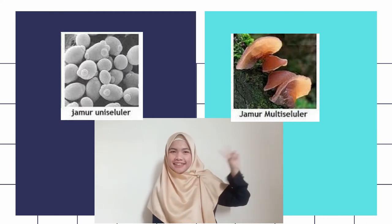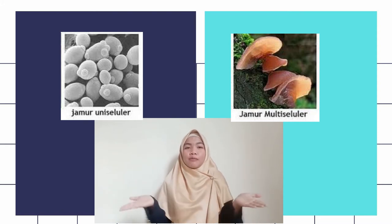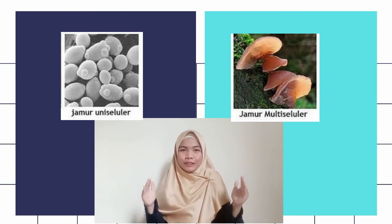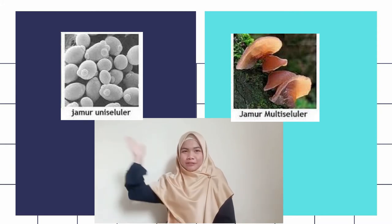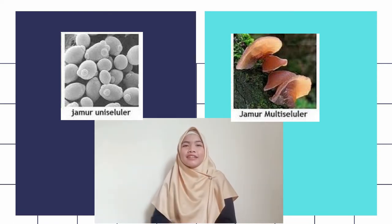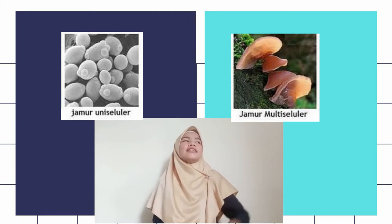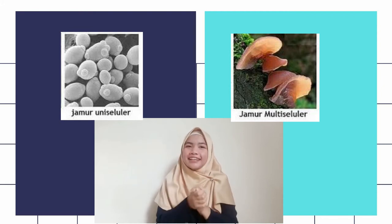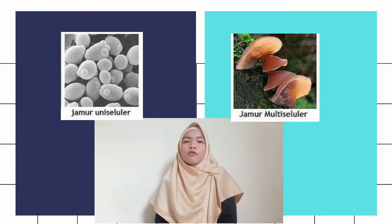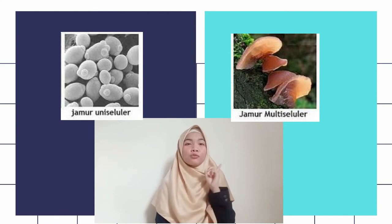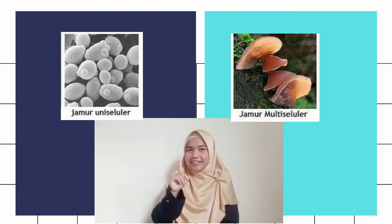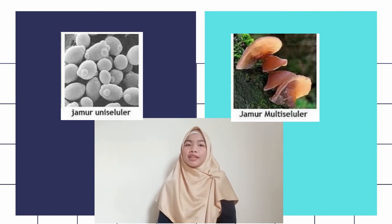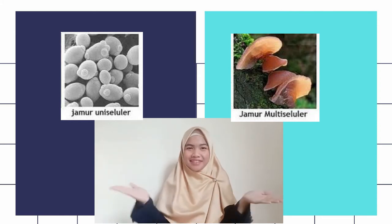Sekarang kita masuk kepada karakteristik yang kedua, yaitu jamur yang memiliki tubuh uniseluler dan jamur yang memiliki tubuh multiseluler. Ibu telah menampilkan gambar berupa jenis jamur yang uniseluler dan jenis jamur yang multiseluler. Untuk jamur yang uniseluler, tubuh jamur hanya memiliki satu sel saja. Dan untuk jamur yang multiseluler, tubuh jamurnya memiliki lebih dari satu sel atau memiliki banyak sel.